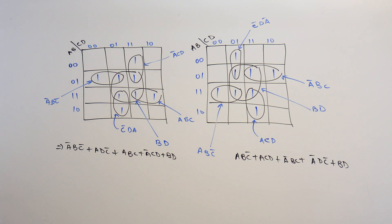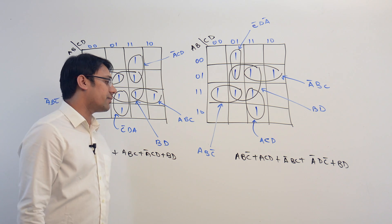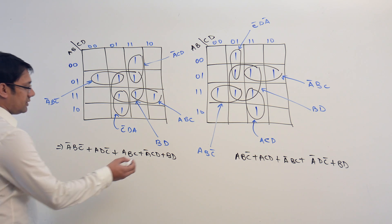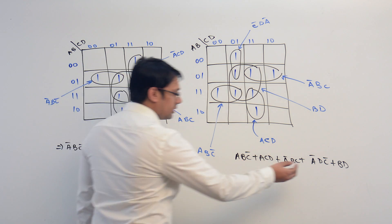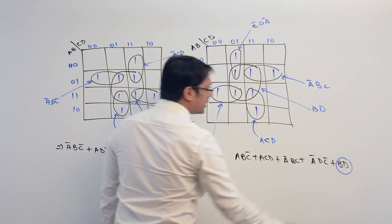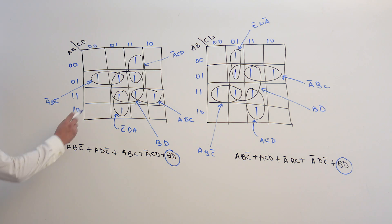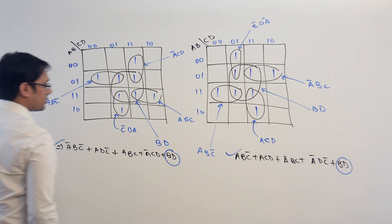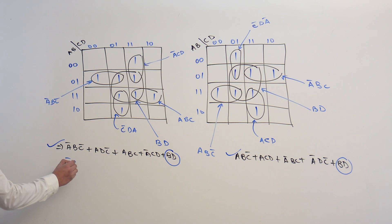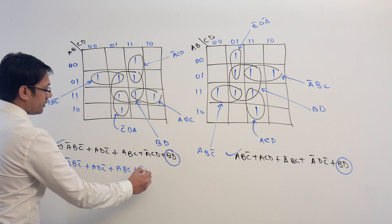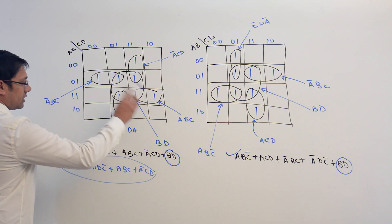Now by looking at these two solutions, you may think that these two solutions are going to give us the minimized equation, but these two equations are not minimized. Here in this equation, this BD — even if you add this BD or even if you don't use this BD in the solution equation, still the solution will be correct. That means we are not changing the logical value of the function; this is representing the same function.